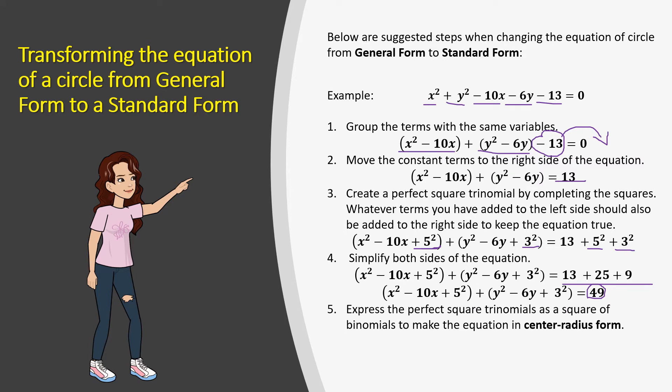Now let's express this perfect square trinomial as a square of binomials. We have x minus 5 squared plus y minus 3 squared equals to 49. As you can see, it is already in the standard form, or center-radius form.